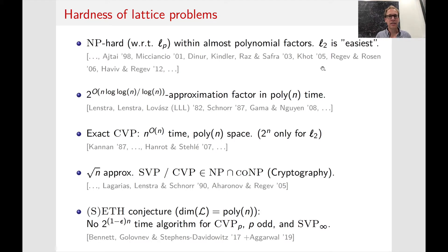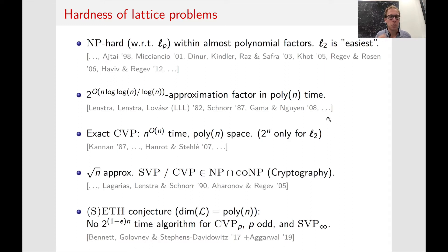Currently, the best we can do in polynomial time is only to approximate these problems to within a slightly sub-exponential factor. On the other extreme, if you want to solve these problems exactly, you need to spend n^(O(n)) time. The remarkable thing is that there's really nothing in between — we don't know how to obtain, say, a polynomial approximation to the shortest vector in sub-exponential time.